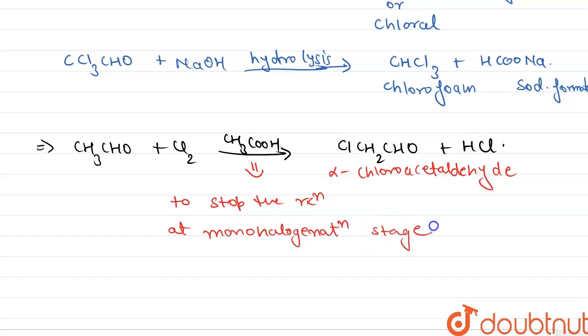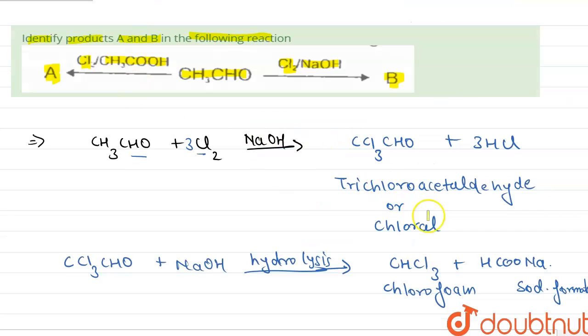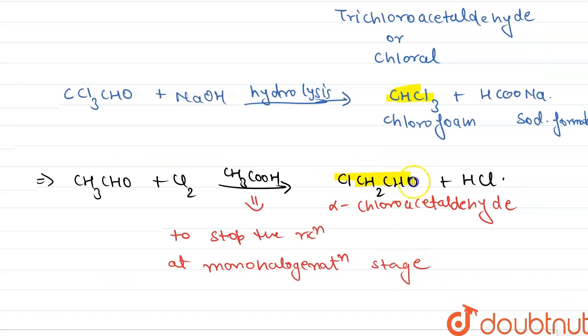Whereas in presence of base, polyhalogenation occurs. So thus from here, we can say that in this reaction, this is our compound B and this is our compound A.